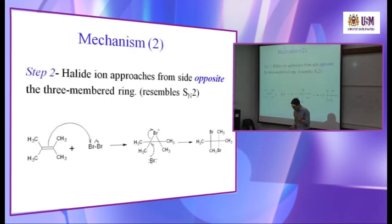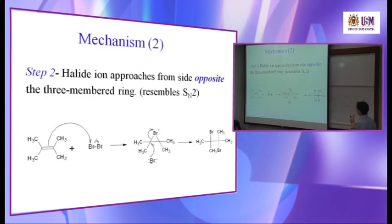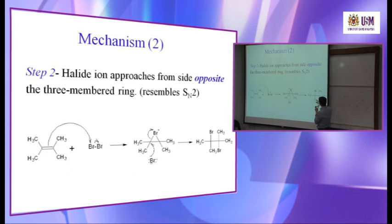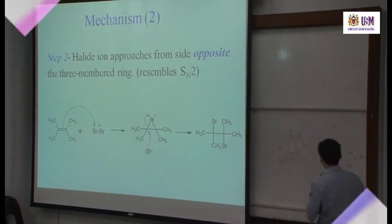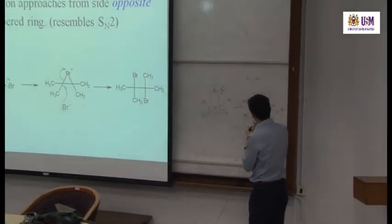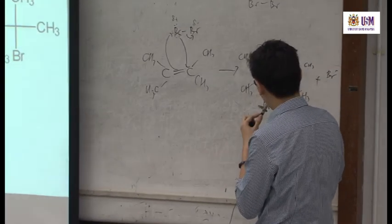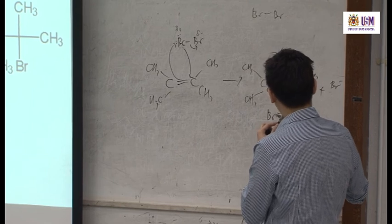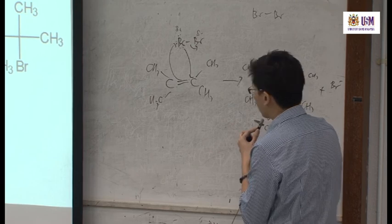The halide ion approaches from the side opposite the three-membered ring. That means you have to attack from the bottom — because the Br is on top, it cannot attack from above. If it attacks from above you would get a syn product. If you attack from the opposite side you get an anti-product. The Br ends up on the opposite side. So you have Br here and Br on the other side — with the CH₃ groups. So you might want to change and add this into the mechanism to make it clearer.